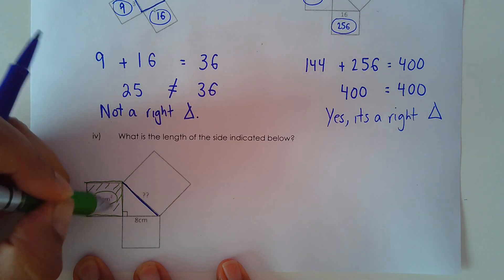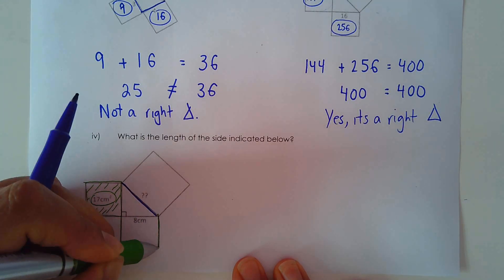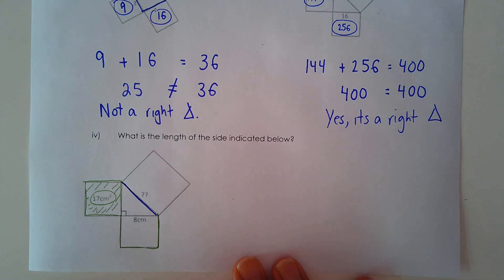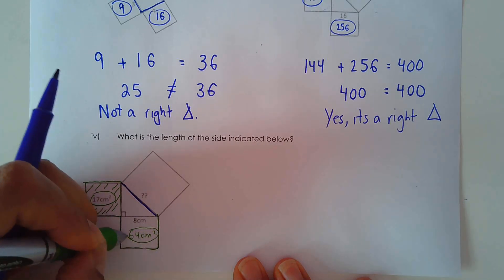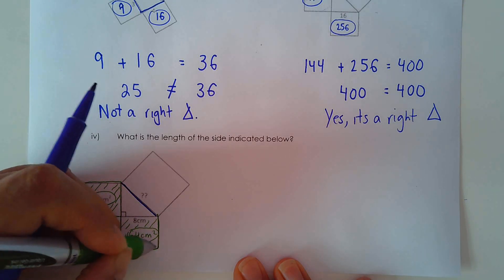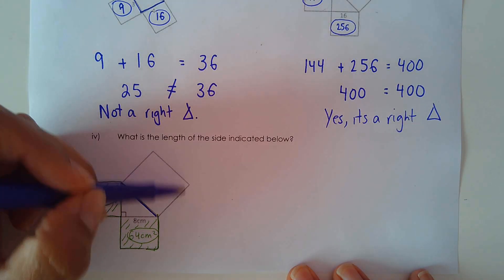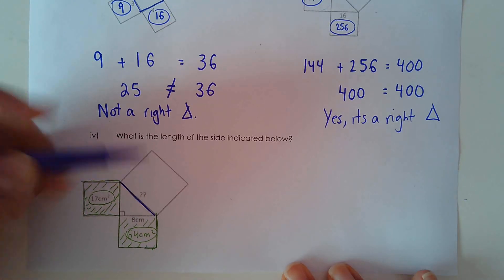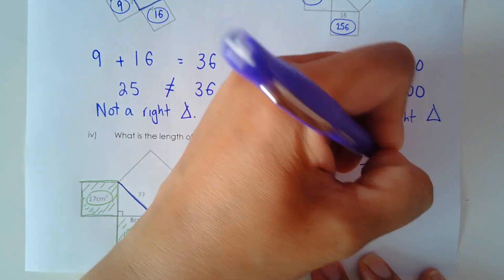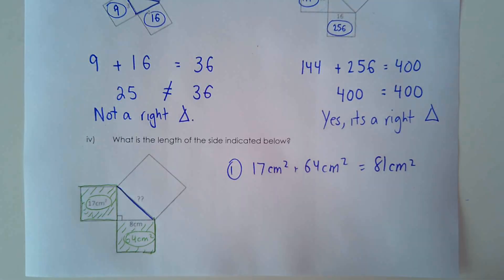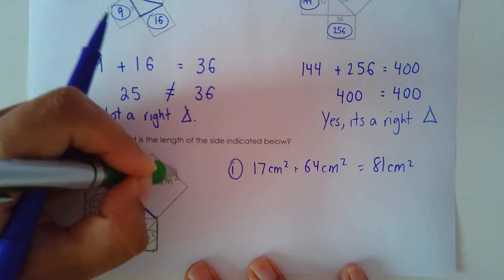For this square here, I know the side length to be 8 centimeters, so I calculate the area: 8 times 8 is 64 centimeters squared. We know it's a right triangle, so 17 plus 64 will give me the area for the hypotenuse square. So 17 centimeters squared plus 64 centimeters squared equals 81 centimeters squared. This square here is 81 centimeters squared.